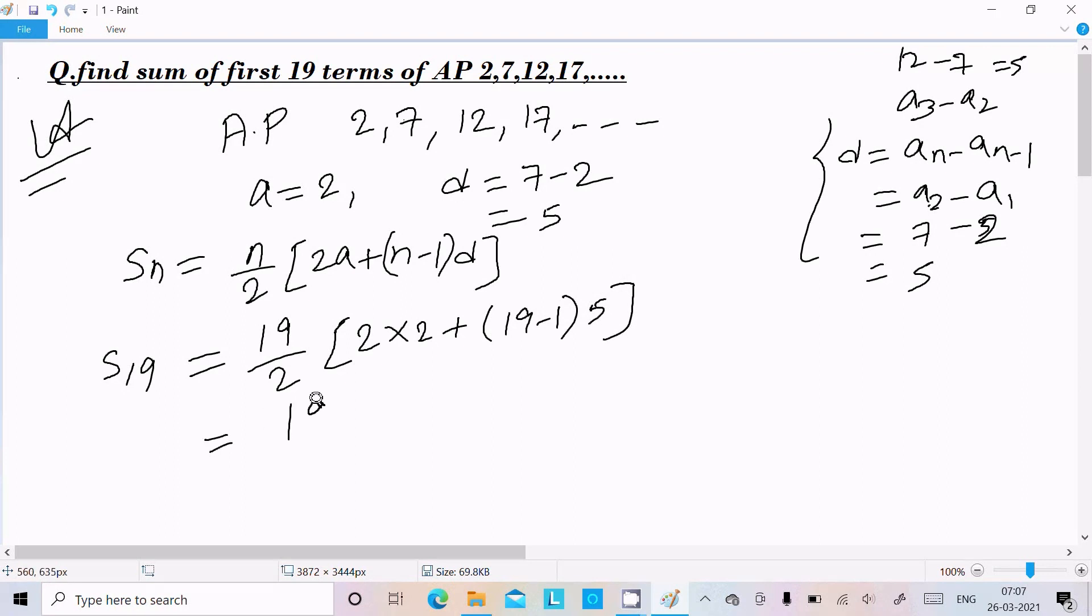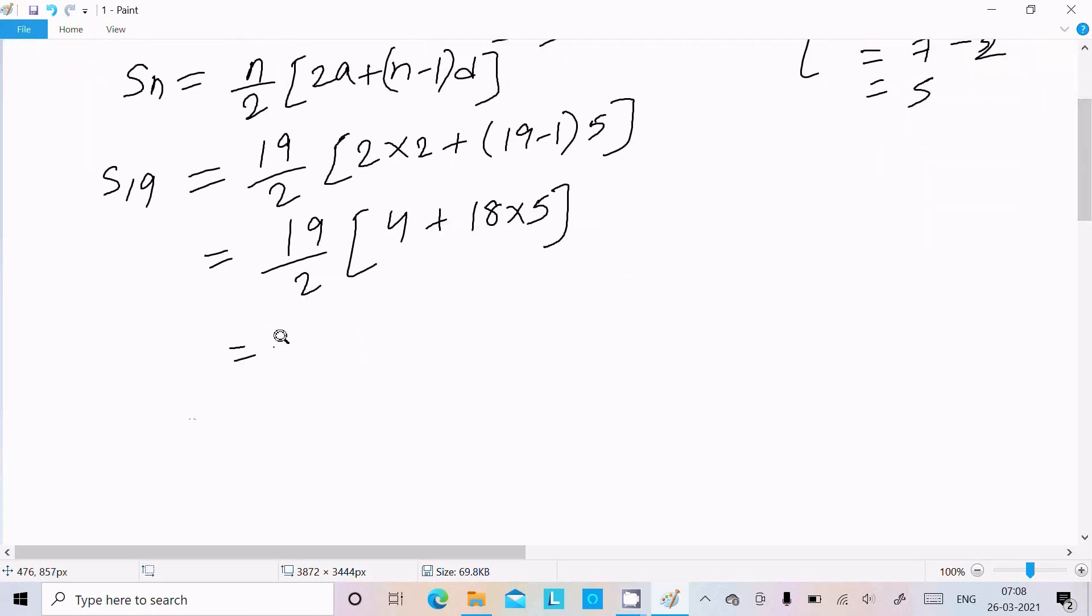Now here 19 divided by 2, 2 into 2 is 4, and here 19 minus 1 that is 18 into 5. Thereafter, 19 divided by 2, 4 plus 18 into 5 is 90.